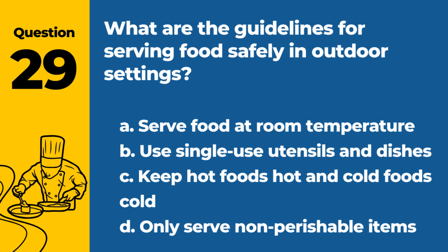Question 29. What are the guidelines for serving food safely in outdoor settings? a. Serve food at room temperature. b. Use single-use utensils and dishes. c. Keep hot foods hot and cold foods cold. d. Only serve non-perishable items. Answer: c. Keep hot foods hot and cold foods cold. This principle is essential to maintain food safety in outdoor settings.